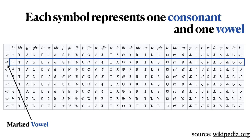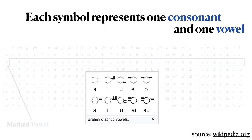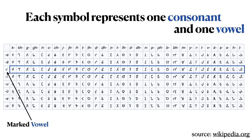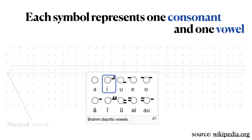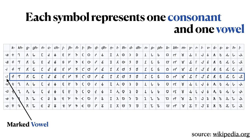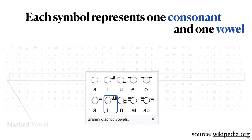In the second row, the marked vowel is a long A sound. Here is a chart of diacritic symbols for Brahmic. This short horizontal line marks a long A. In the next row, the marked vowel is a short I, and the diacritic is a horizontal line with a vertical. In the following row, the marked vowel is a long I, and the diacritic is a horizontal with two verticals.